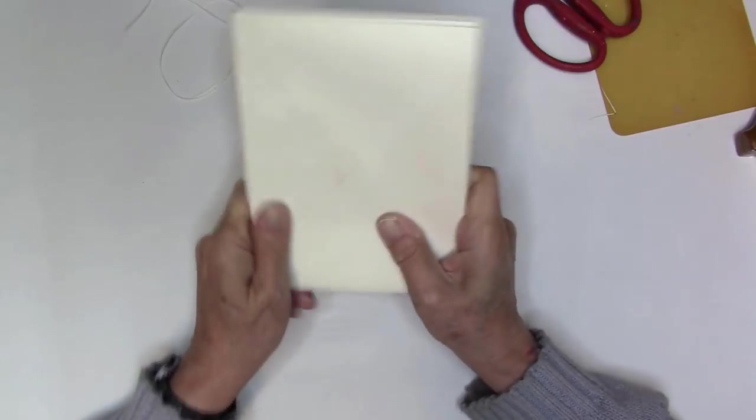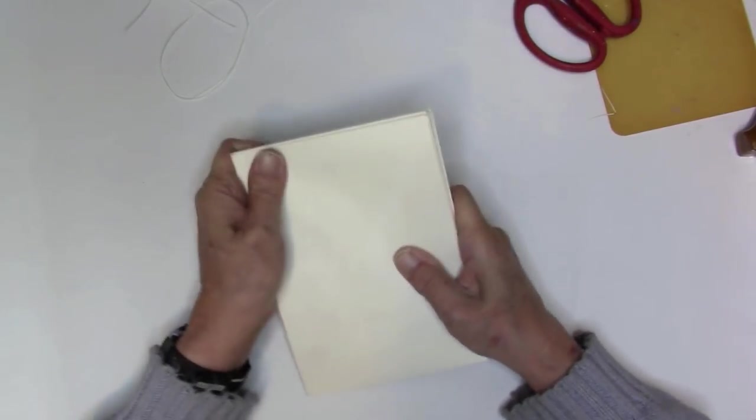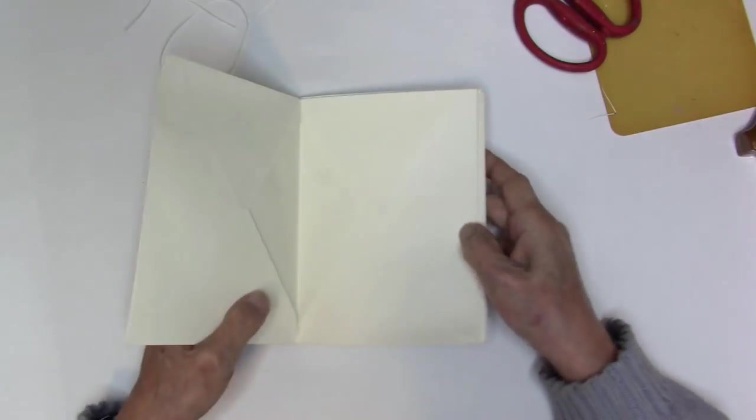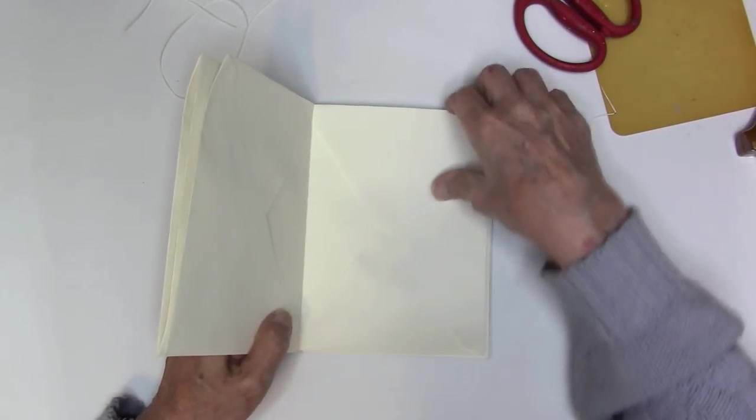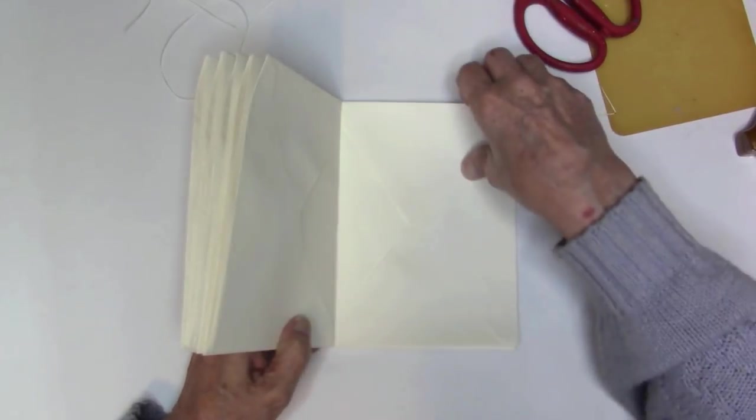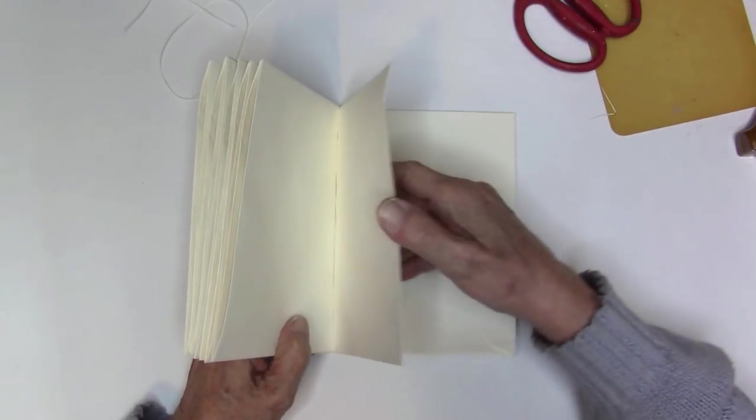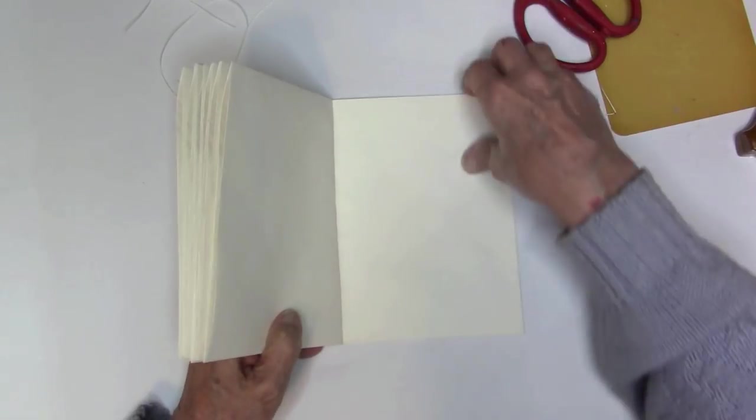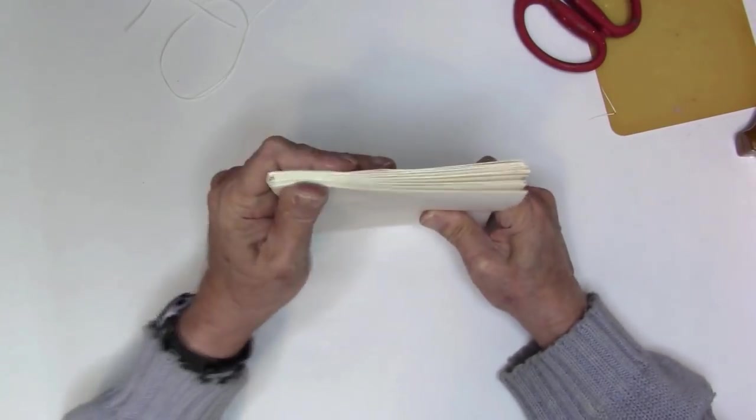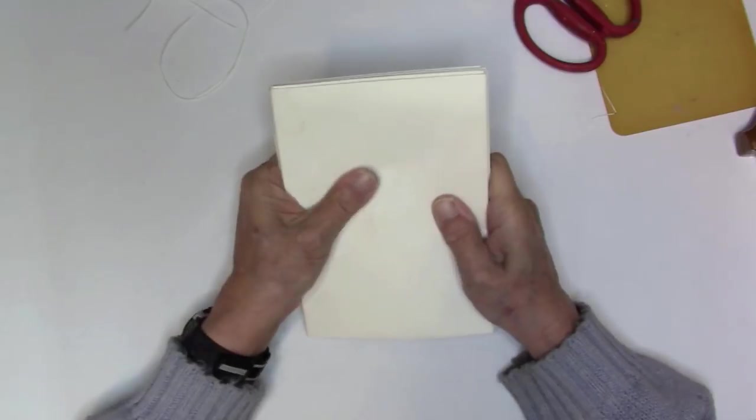So I was thinking I'd like to cover it. I don't know with what. So that gives me, let's see, 2, 4, 6, 8, 10, 12, 14, 16, 18, 20, 22, 24, 26, 28, 30, and 32. Front to back, it's 32 pages, which is a pretty good size little journal.